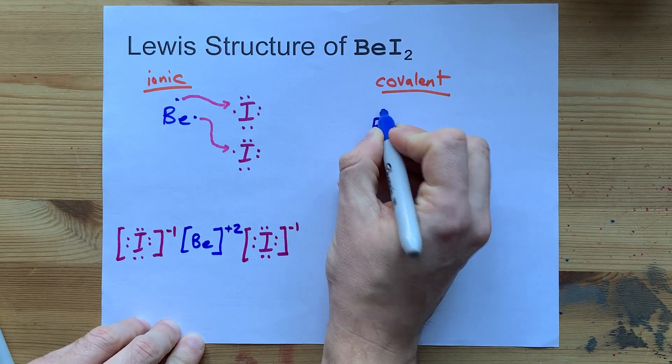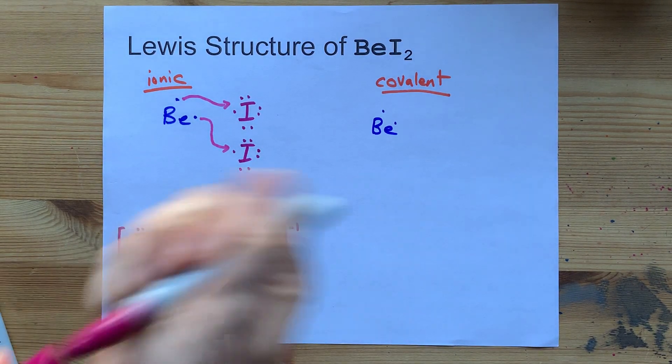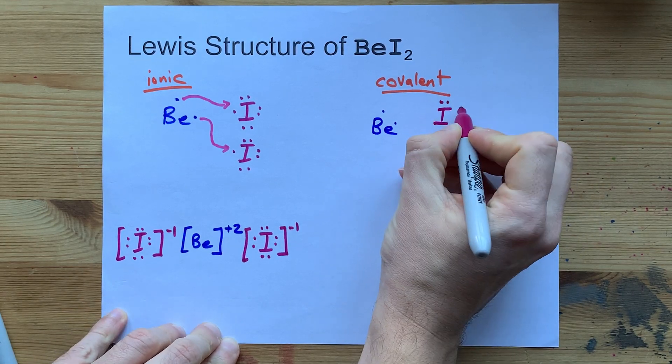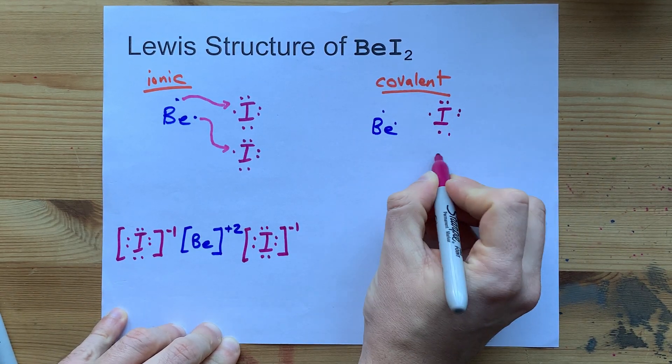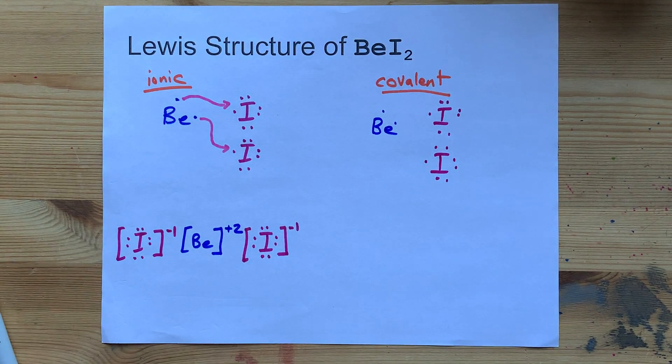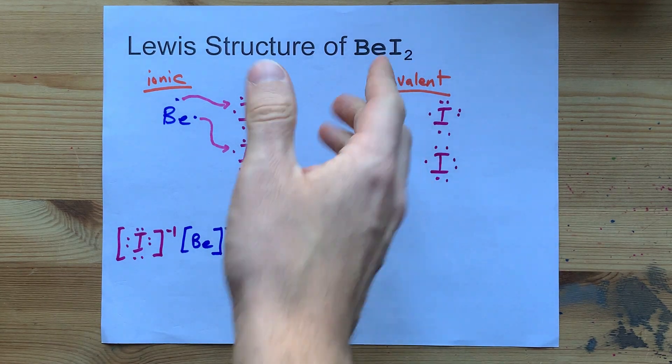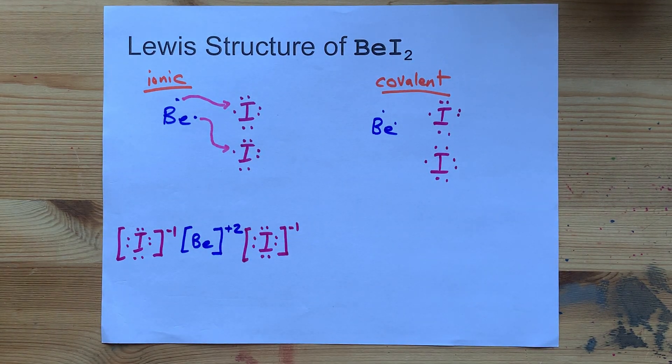Instead, beryllium, with its 2 valence electrons, will react with the 2 iodine atoms, 7 valence electrons each. And instead of transferring electrons, they're going to share electrons. That's what covalent bonding is all about.